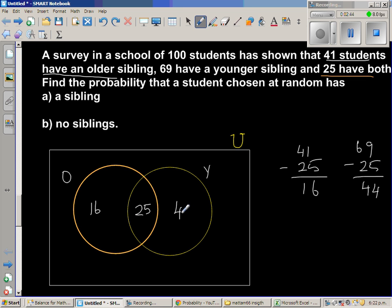Again, what does this 44 mean? This is for the students who have only younger siblings. They don't have older siblings. They have only younger siblings. So this 25 is for students who have older and younger siblings.